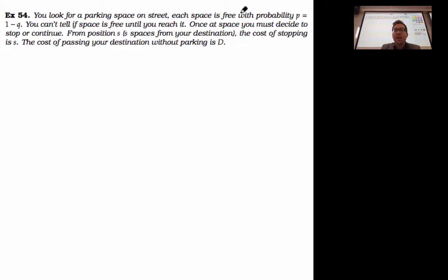And on that street, each space is free with probability p, which is equal to one minus q. You're going to drive along the street, space is free, you can either park or not. Each space you have to decide to stop or not. And you're trying to get to the destination, which is at the end of the street.